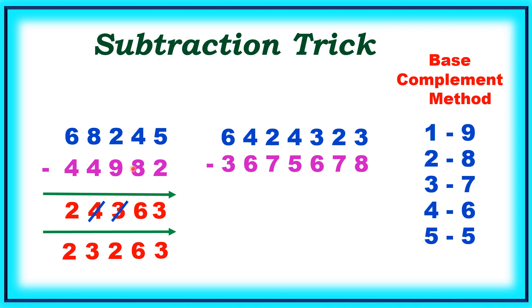We will try another one. We have to subtract 3675678 from 6424323. In the previous sum we have taken two steps.